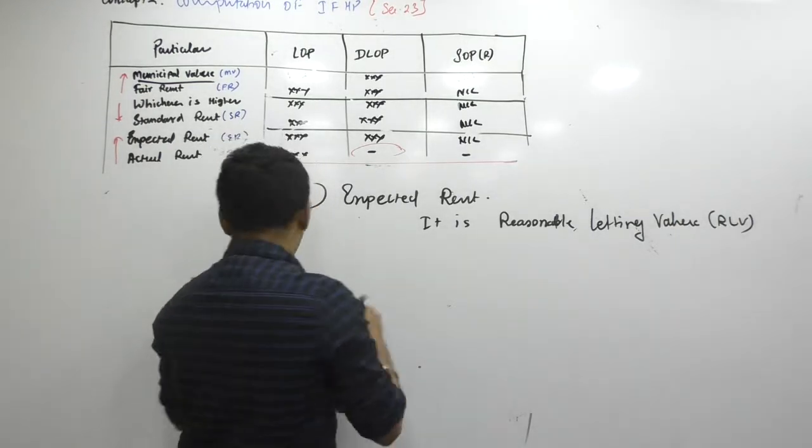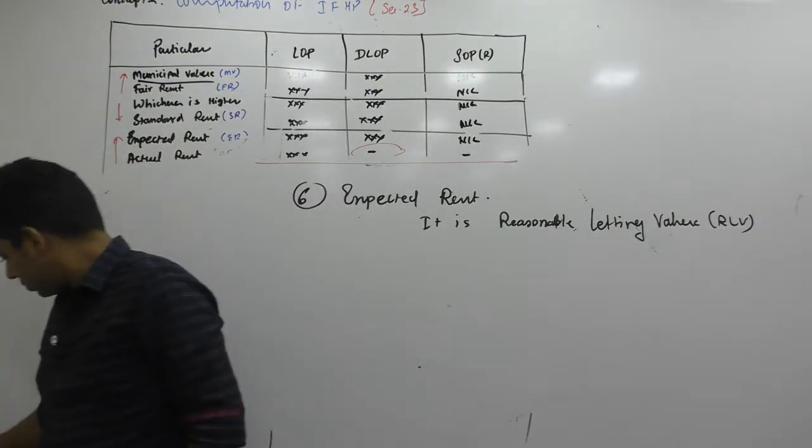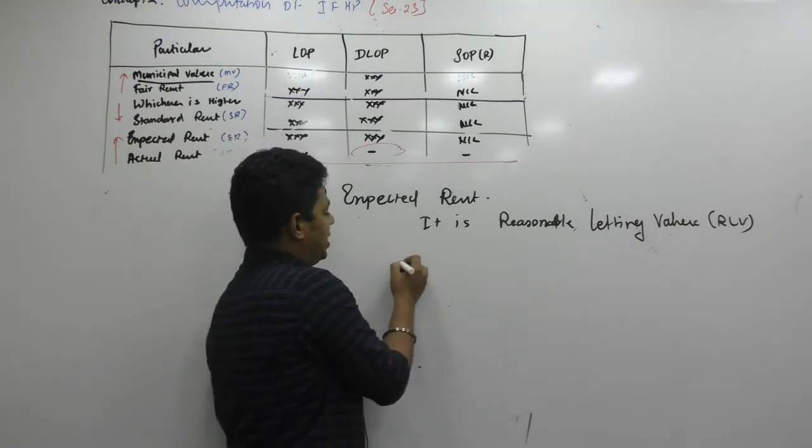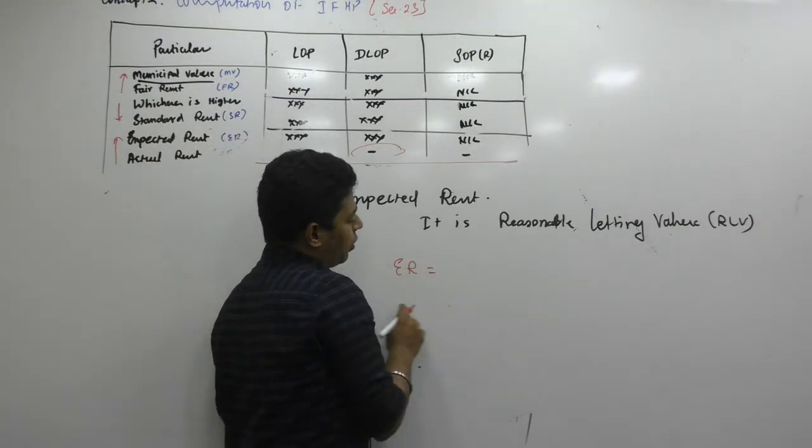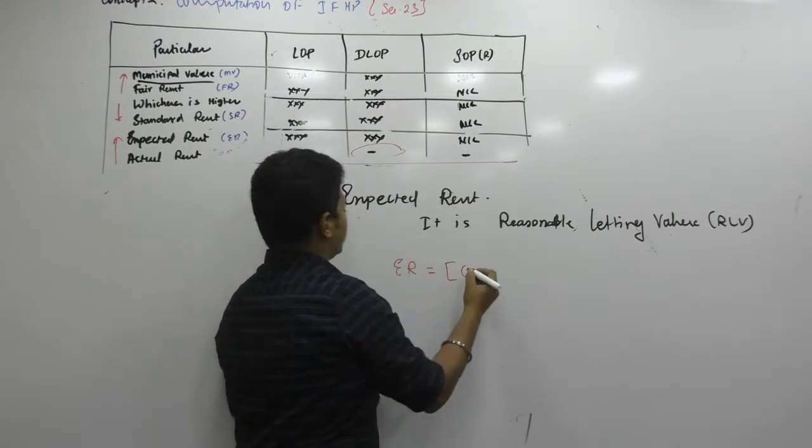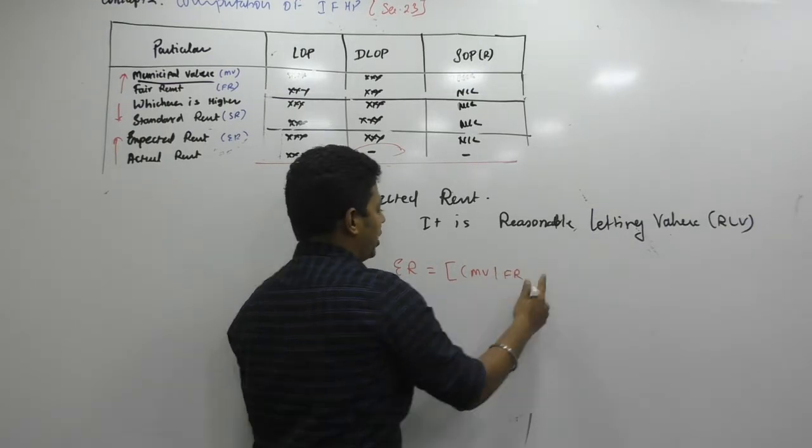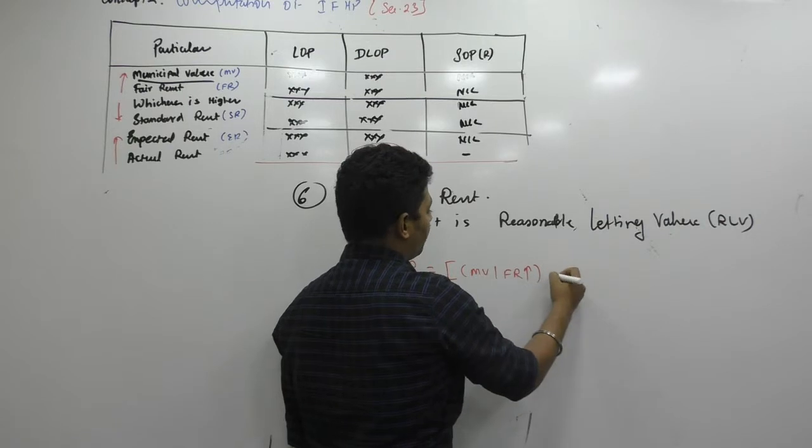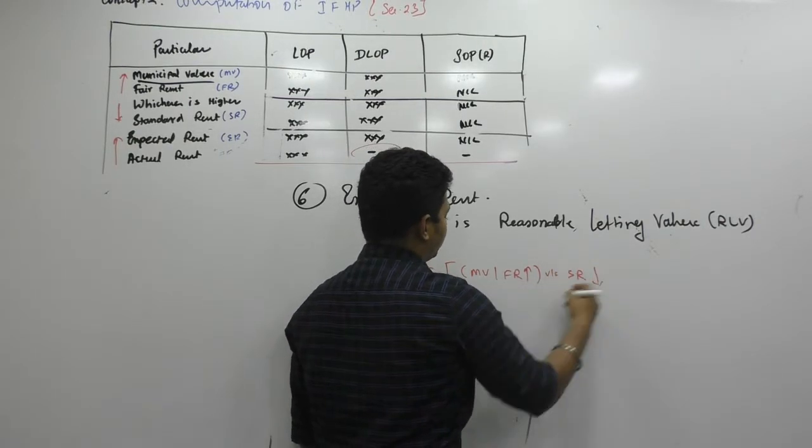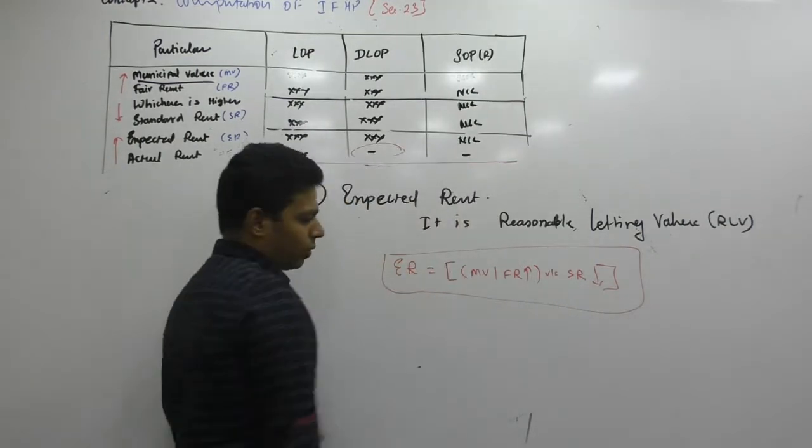Alright, how do we get it mathematically? How do we get it mathematically? Expected rate is the outcome of - first, we will compare with what? Check there, municipal value, we will compare with Fair Rent. We take whichever is higher. That number we will compare with Standard Rent, and out of this we will take whichever is lower. That will be expected rent. Make this mathematical formula there.